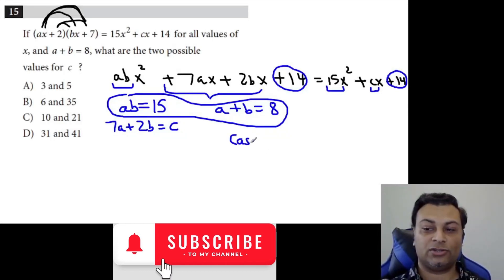You could have a situation, case 1, where A is the 3 and B is the 5. But similarly, you could have another situation where A is 5 and B is 3. They would still sum to 8. They would still multiply to 15.